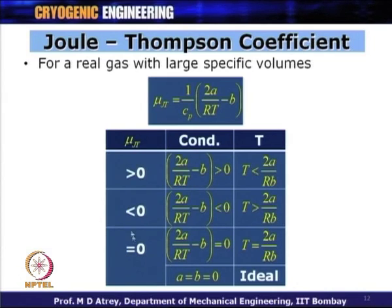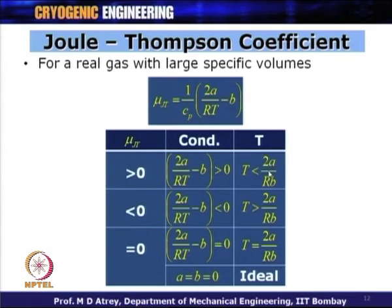This essentially tells us what the inversion temperature would be for a particular gas depending on values of A, B, and R. The Van der Waals equation basically decides what the inversion temperature is for a particular gas at different pressures. Based on these values, one can construct the inversion curve.